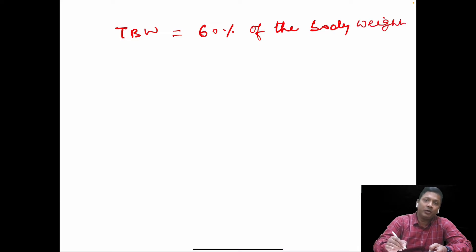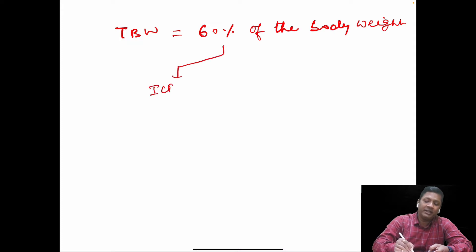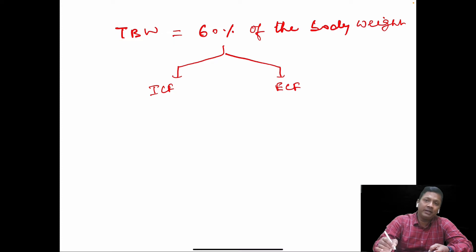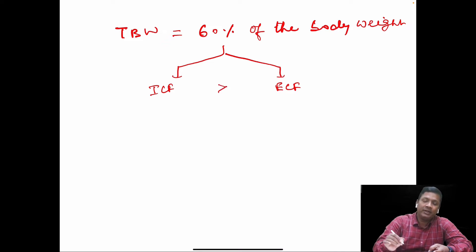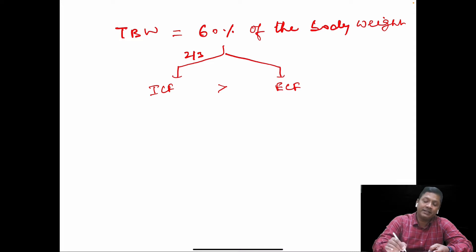This total body water is divided into two compartments. One which is present inside the cell is called the intracellular fluid (ICF), and the other which is present outside the cell is called the extracellular fluid (ECF). Out of these two, the intracellular fluid is more than the extracellular fluid.